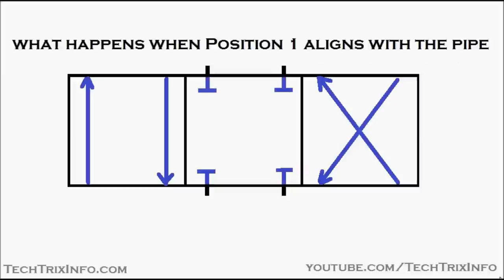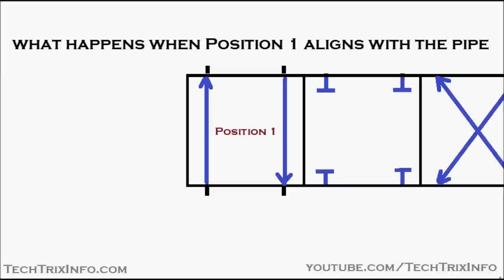When position one aligns with the pipe, you can see there is flow because the pipe is connected. Flow happens in both directions, and that's how position one of the control valve gets aligned and flow is established.